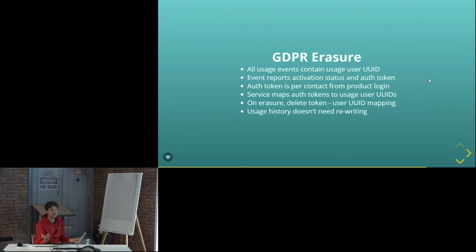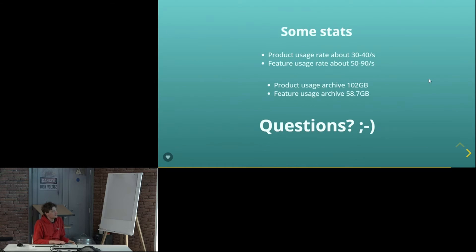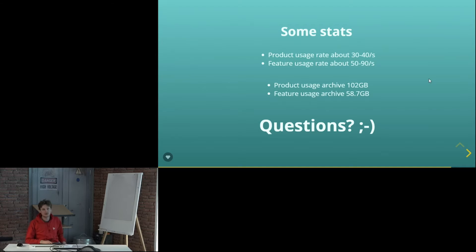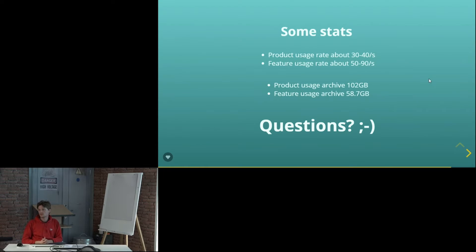BI obviously has more work to do because they've taken that data and combined it with a load of other stuff, so they have a lot more unpicking work to do. Core dev still has more erasure work to do in other parts of the ecosystem, but it's one less gnarly problem. Question from the audience: what does 'cubed' mean? Cubed basically means trying to make a multi-dimensional database — you try to denormalize stuff so that it's really good for a wide range of queries. If you have more questions on that, BI are well up on that.